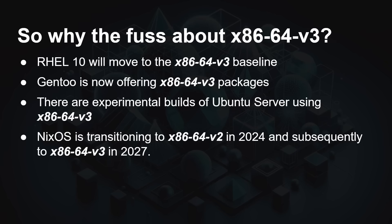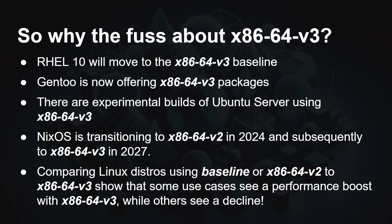NixOS is transitioning to v2 in 2024 and subsequently to v3 by 2027. Comparing Linux distros compiled with baseline or v2 against those with v3 shows that in some cases there is a performance boost, and in some cases there is a performance decline. The compilers are doing their best to work out which instruction sets and extensions to use — sometimes they turn out to be significantly faster, and sometimes they're actually a bit slower. This is a maturing technology in terms of compiler flags and the code the compiler produces for different use cases.